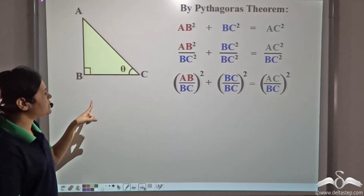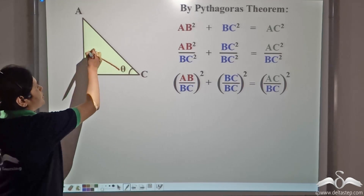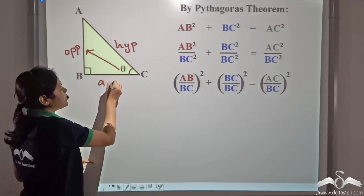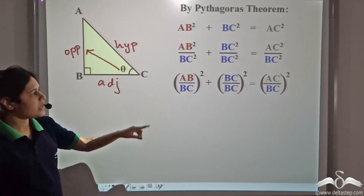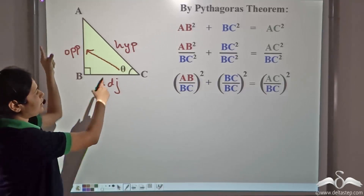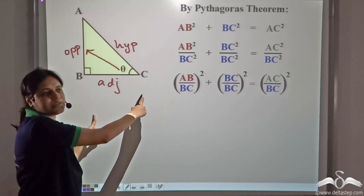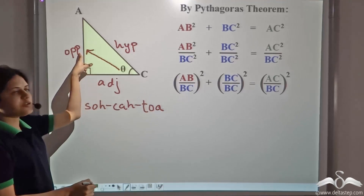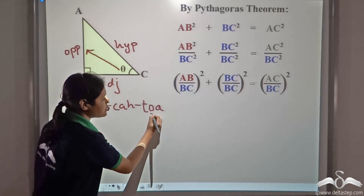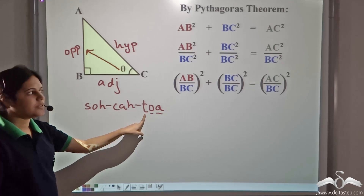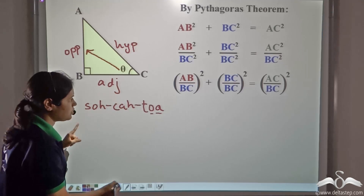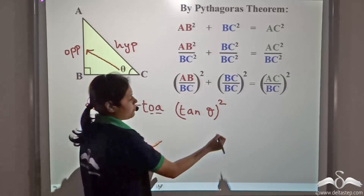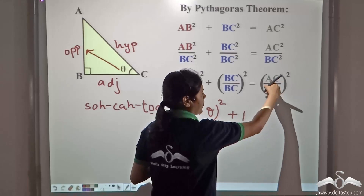Now, with respect to angle theta, again, AB is the opposite side, AC is the hypotenuse, and BC is the adjacent side. AB/BC is opposite by adjacent. So, from SOHCAHTOA, opposite by adjacent stands for tan. So, this equals (tan θ)². BC/BC is 1.